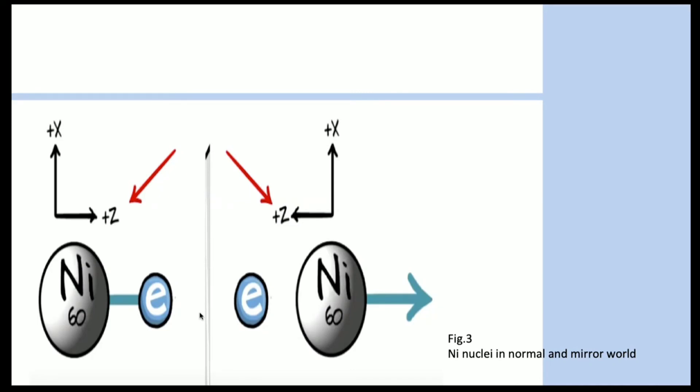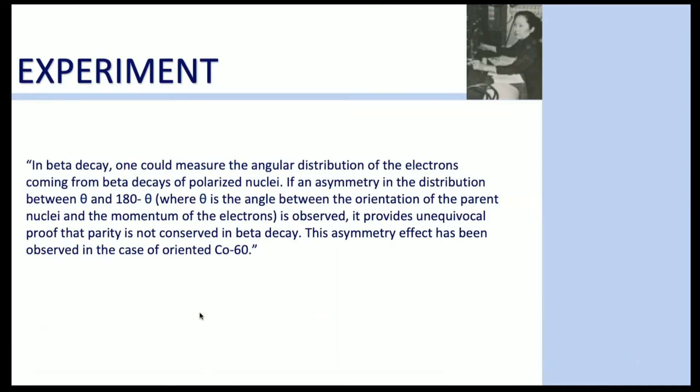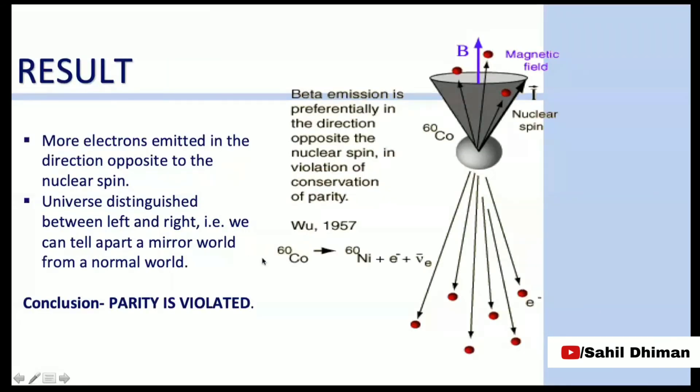From Madame Wu's original paper, she said that if an asymmetry in the distribution is observed, it provides proof that parity is not conserved. This asymmetry effect has been observed. The result was that more electrons were emitted in the direction opposite to the nuclear spin, which tells us that parity is not conserved because this reaction would appear different in the mirror version of the world.